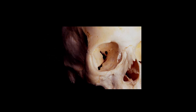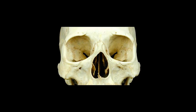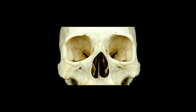Looking at other structures in the orbit, we have the optic foramen or optic canal, the superorbital fissure, and the infraorbital fissure. From this view we can see again the superorbital foramen on this side, and we can see the superior and inferior orbital fissures and the infraorbital foramen.